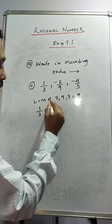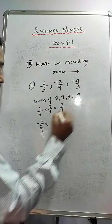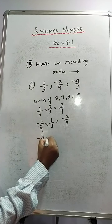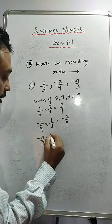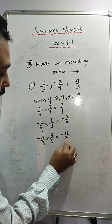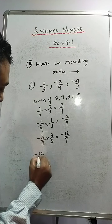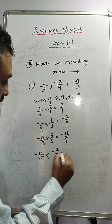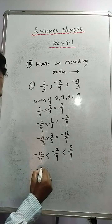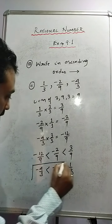For the second rational number: 9 divided by 9 is 1, so multiply 1 with both numerator and denominator — it stays the same. For the third rational number: 9 divided by 3 is 3, so multiply 3 with both to get minus 12 by 9. Now all rational numbers have the same denominator. Compare the numerators: minus 12 is the smallest, then minus 2, then 3. So the ascending order is: minus 4 by 3 is less than minus 2 by 9 is less than 1 upon 3.